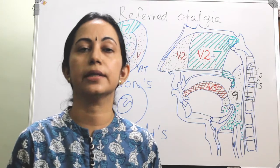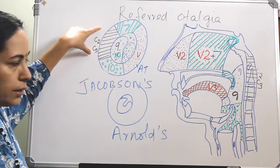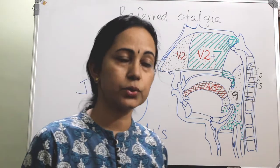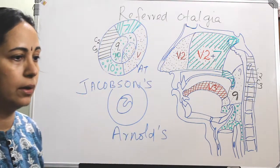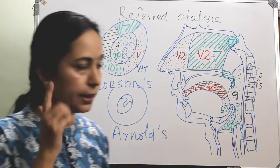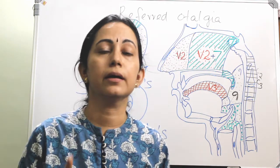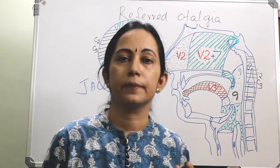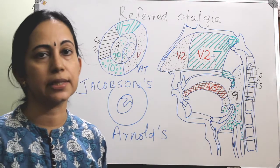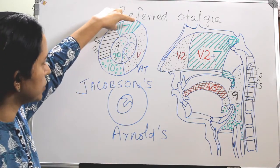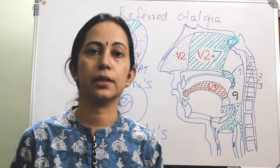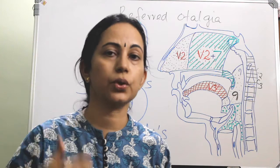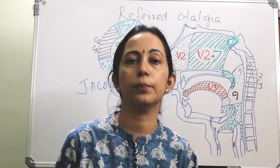The greater auricular and lesser occipital nerves through C2 and C3 supply the skin in front and behind the ear, the medial and lateral aspects of the pinna, and the ear lobule. A small part of the posterior superior external auditory canal, along with touch, pain, and temperature sensation of the posterior auricular area, is supplied by the seventh nerve through the posterior auricular nerve.